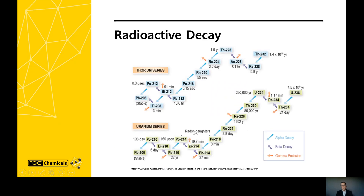Uranium and thorium decay to form new isotopes as shown here. The decay takes the forms of alpha decay, beta decay, or gamma emissions. The isotope half-lives may be only a few seconds, a few minutes, to thousands upon thousands of years. In the decay series shown here, we're most concerned with radium-226, radium-228, radon, and lead-210.